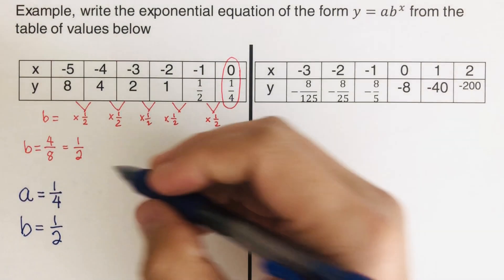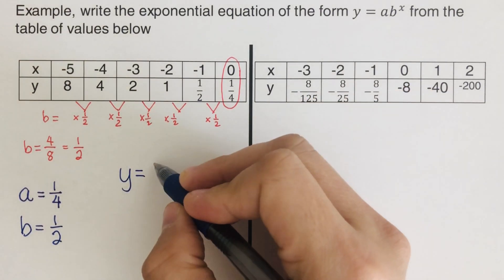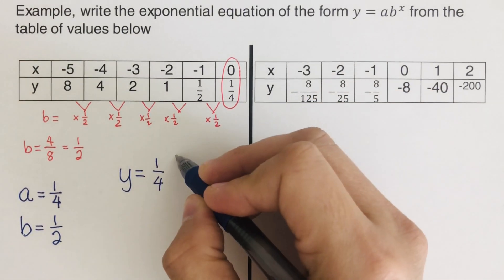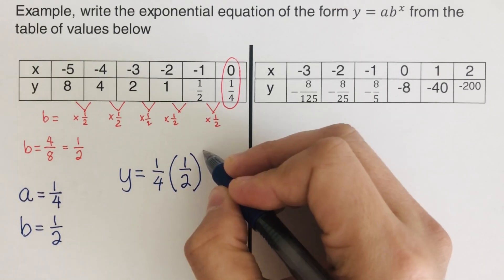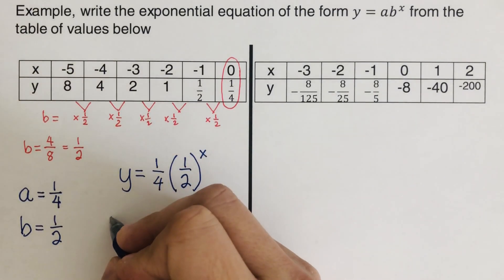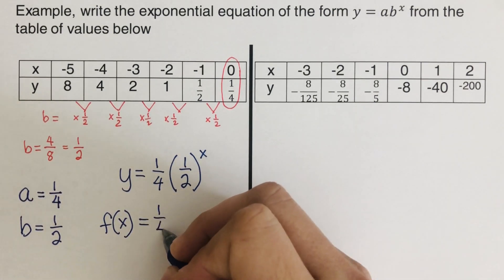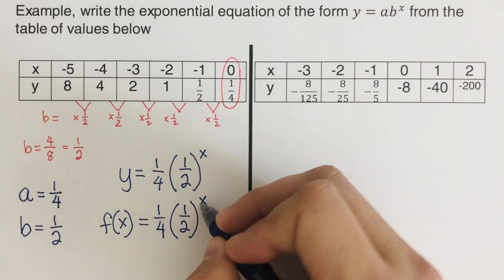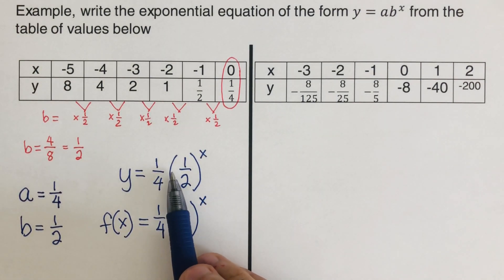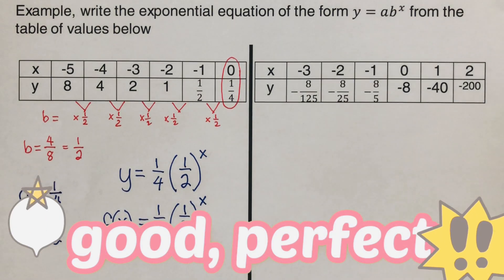Our b is 1/2. So we can set up our equation as y is equal to 1/4 times (1/2) to the power x. Or in function notation, that's f of x is equal to 1/4 times (1/2 to the power x). Others may use a dot instead of parentheses — that is still correct. Did you get the same answer? Good.